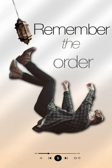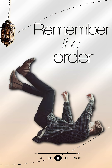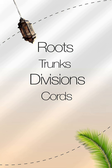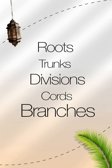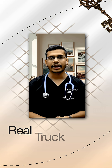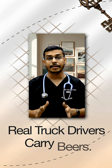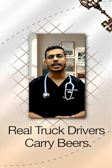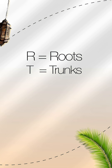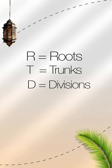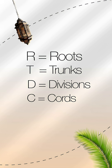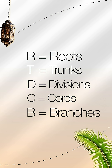Step 1: Remember the order — roots, trunks, divisions, cords, branches. Mnemonic time: 'Real Truck Drivers Carry Beers.' R for roots, T for trunks, D for divisions, C for cords, and B for branches.